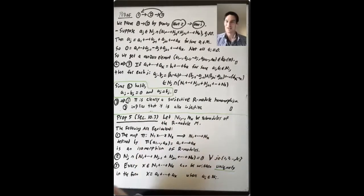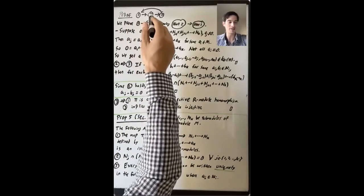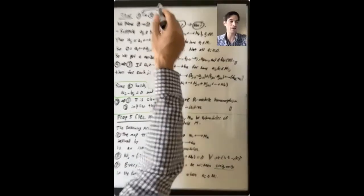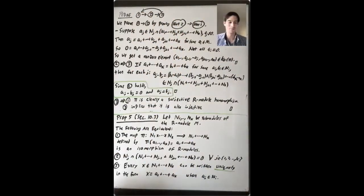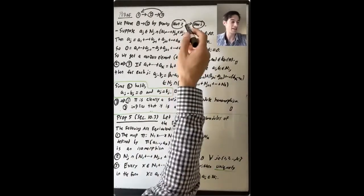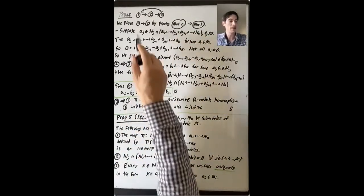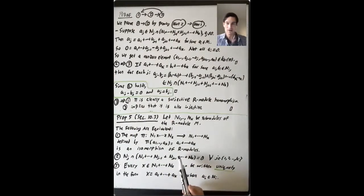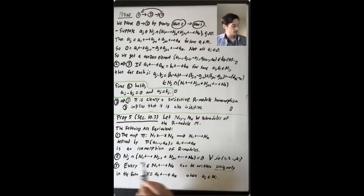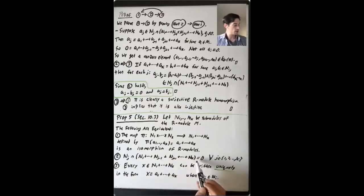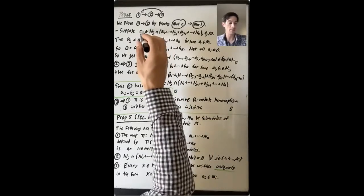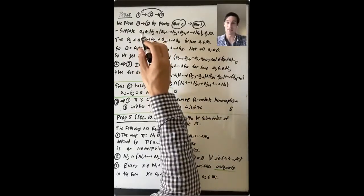Let's prove this proposition — that these three statements are equivalent. We'll prove 1 implies 2, 2 implies 3, and 3 implies 1. We start by proving 1 implies 2 via the contrapositive: not 2 implies not 1. The negation of 2 means there's some j for which the intersection of N_j with the sum of all the other modules is not just zero. We pick that j and take a non-zero element a_j in that intersection.